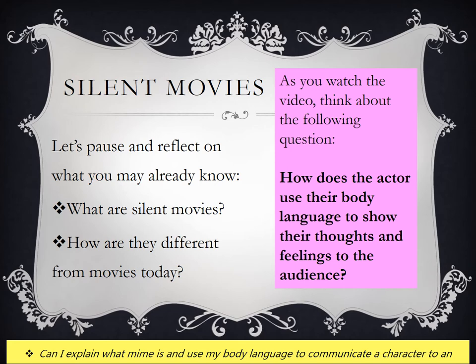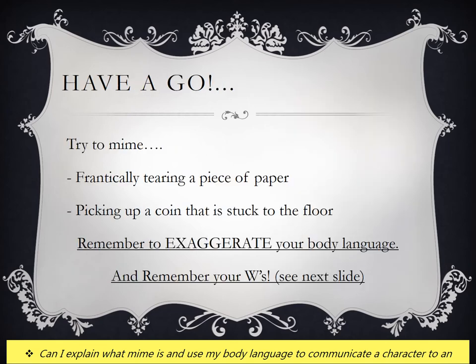You'll need to watch a short video — the link can be found in the PowerPoint notes section for the teacher's reference. As you watch, notice that it all uses MIME: there is no sound from the actors, they're not using their voices, it's all through body language. The question I want you to think about and discuss afterwards is: how does the actor use their body language — their face, hands, arms, legs, their entire body — to show their thoughts and feelings to the audience? Hopefully that video gave you a little more understanding of what MIME looks like and how it can show the audience how a character is thinking, feeling, or performing an action.